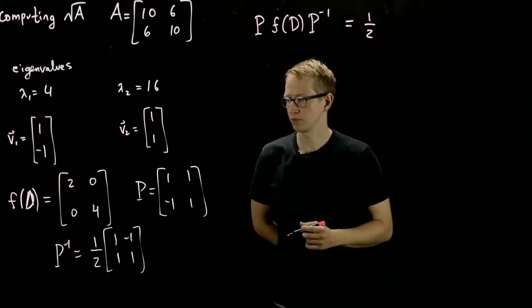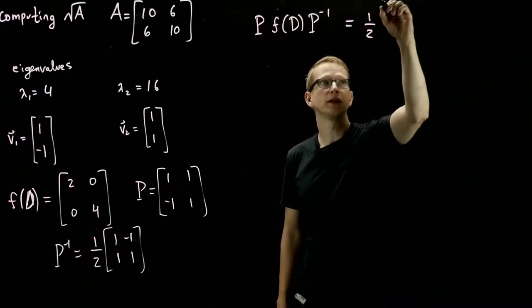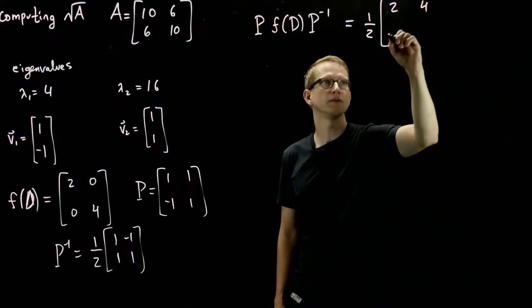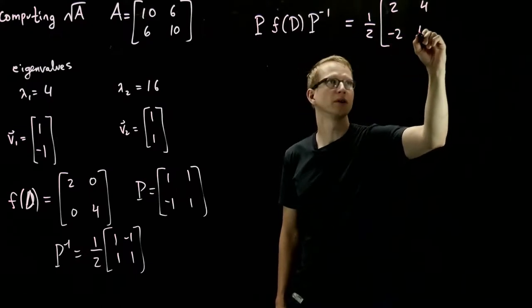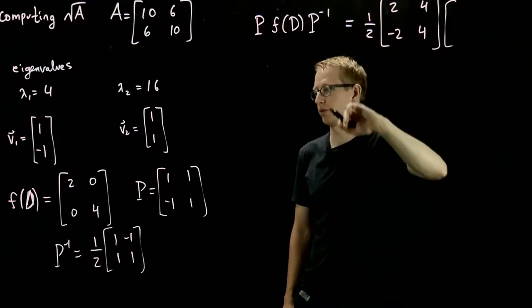So if we take 1 half, when we multiply P with f of D, we get 2, 4, negative 2, 4. And then we also have P inverse still here. I've already pulled that 1 half out.